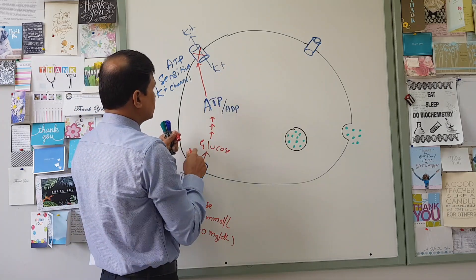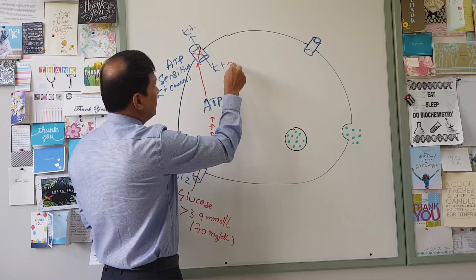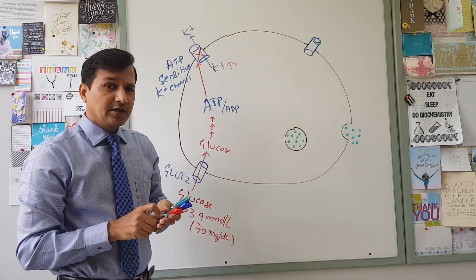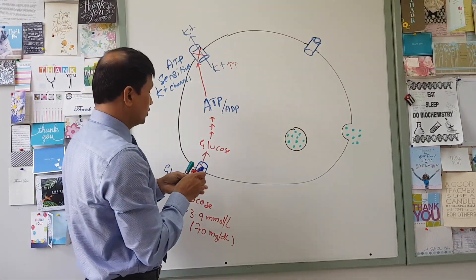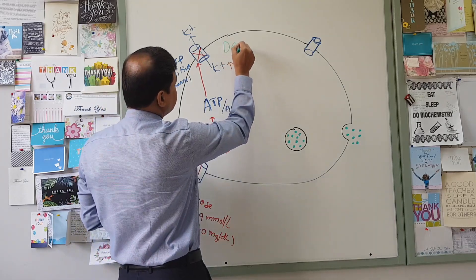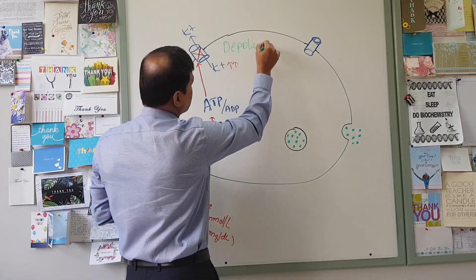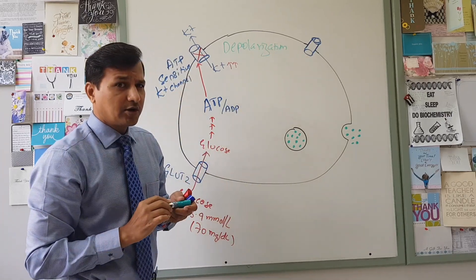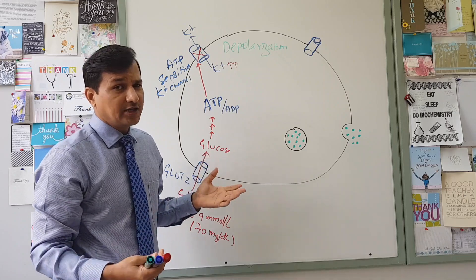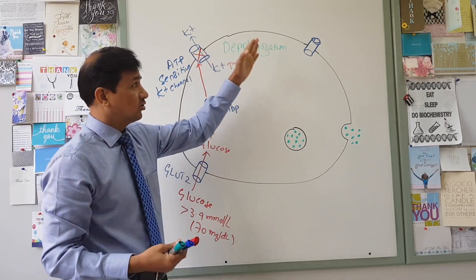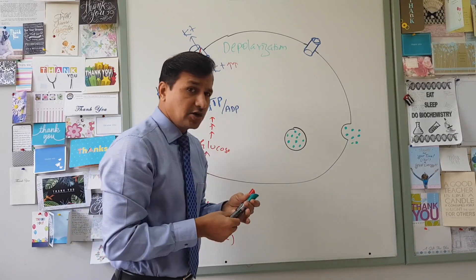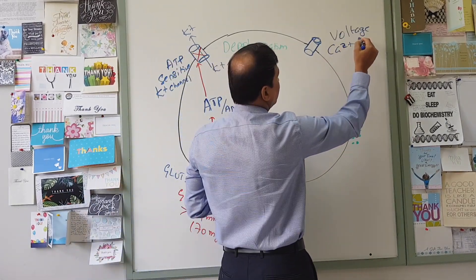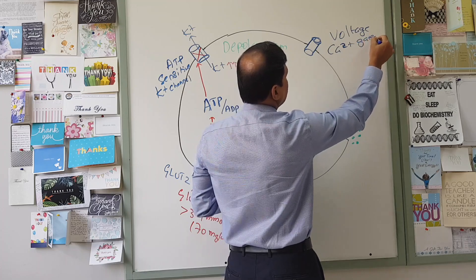Once the ATP binds and the potassium channel is closed, there will be more potassium inside the beta cell. More positive charges accumulate, leading to depolarization of the membrane. So membrane depolarization occurs, which represents a voltage change in the membrane.